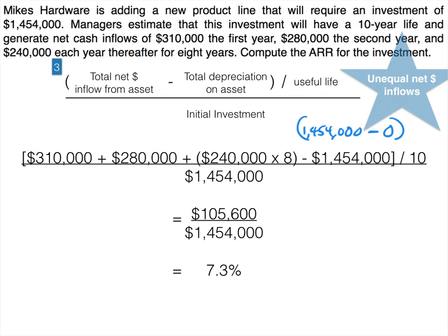The accounting rate of return comes out to 7.3%. We can't determine if this is a good investment without knowing the company's required rate of return. If the ARR is higher than the required rate of return, it's a good investment; if it's lower, it is not.